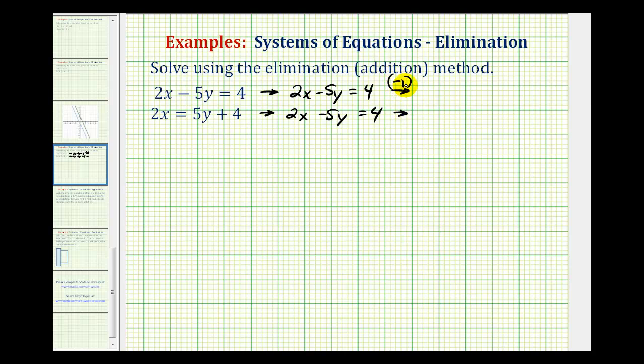So multiplying by negative 1 is just going to change the sign of everything. So we'll have negative 2x plus 5y equals negative 4. The second equation is going to stay the same.